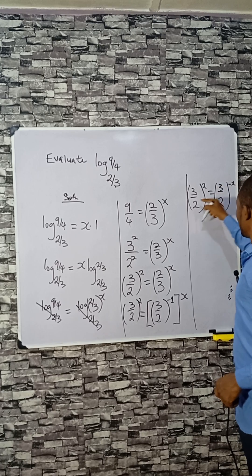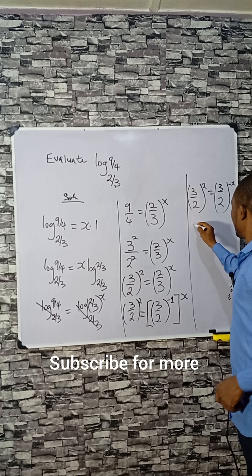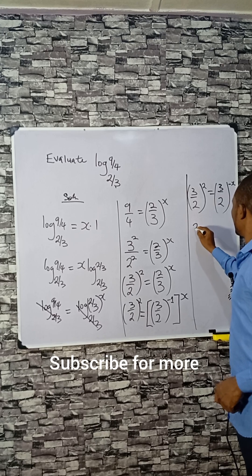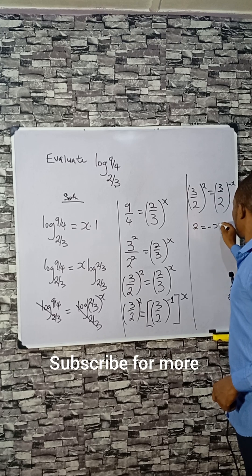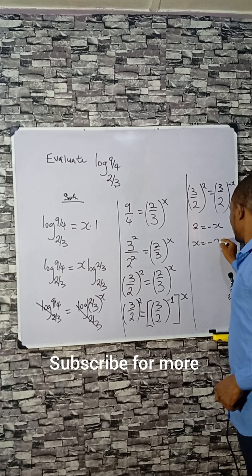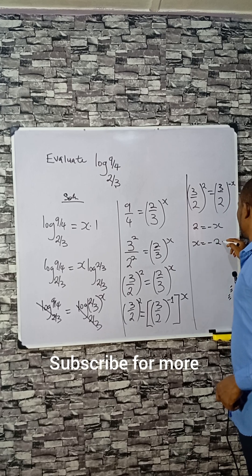Minus minus x. So they have the same base now, that will be equated to power. So we have 2 equals to minus x, and our x equals to minus 2. So this is the answer, we stop here.